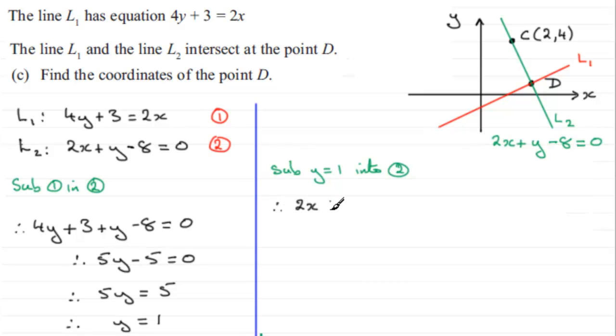So if I do that, I therefore have 2x + the y value, which we now know is 1, minus 8 equals 0. So if I clean this up now, we therefore have 2x + 1 - 8 is -7, equals 0. So if I add 7 to both sides, I get 2x = 7.